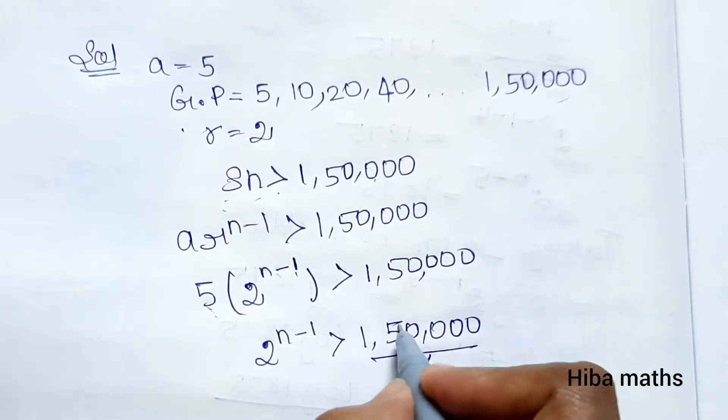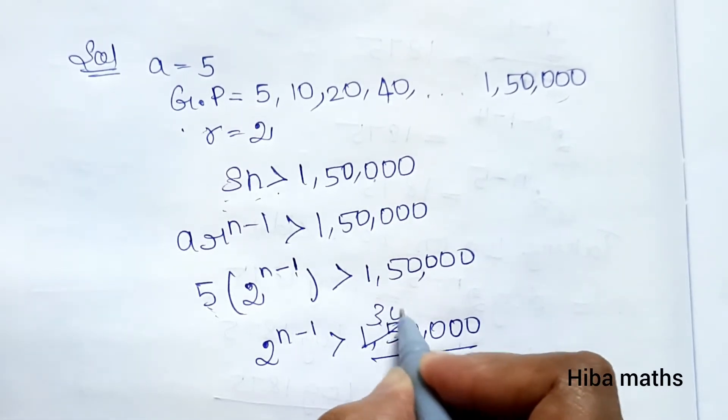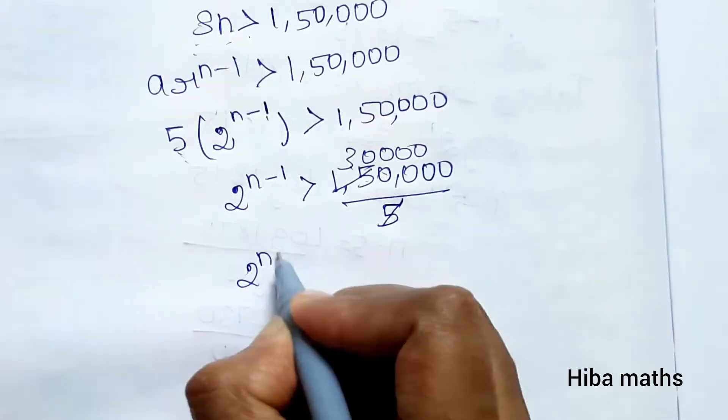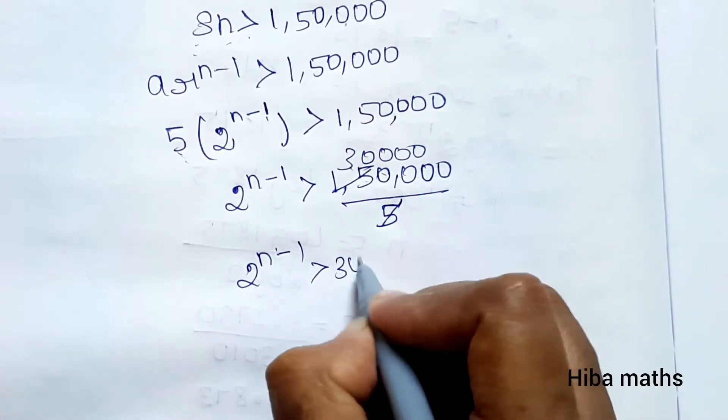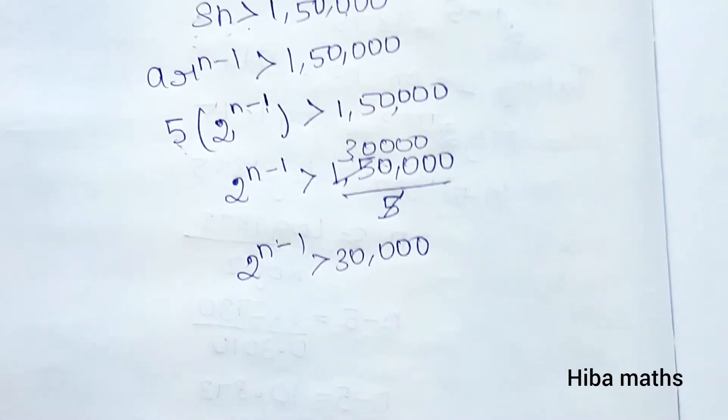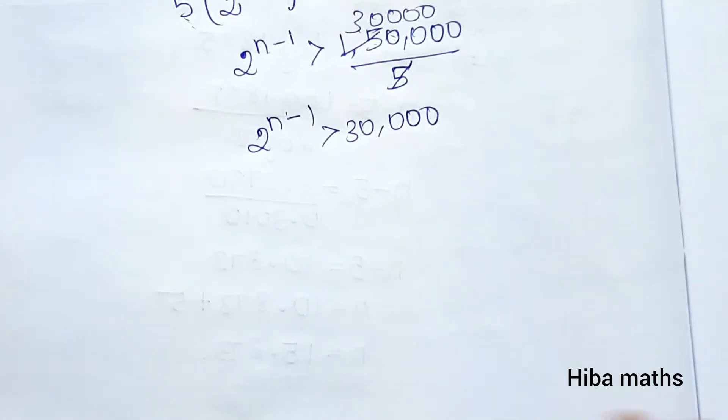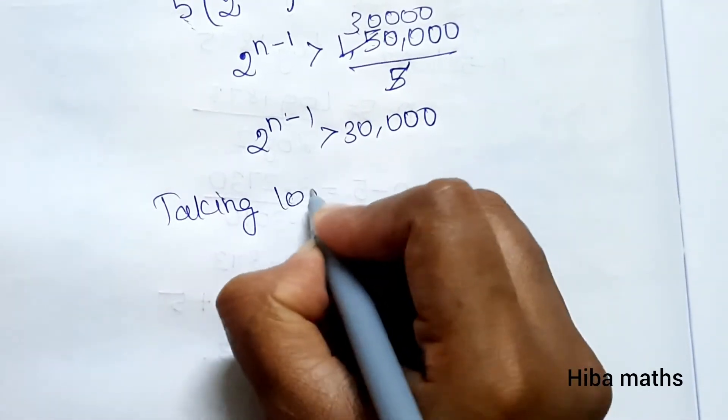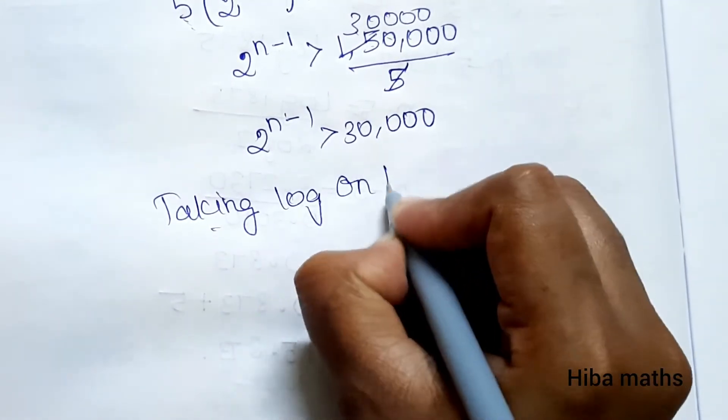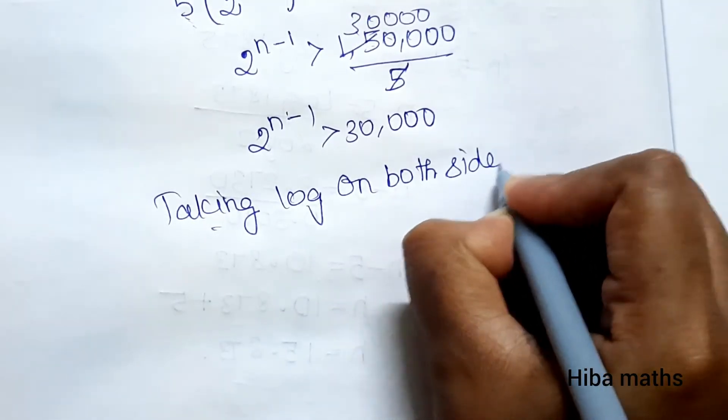2 power n-1 is greater than 30,000. Now we'll take log on both sides to solve for n.